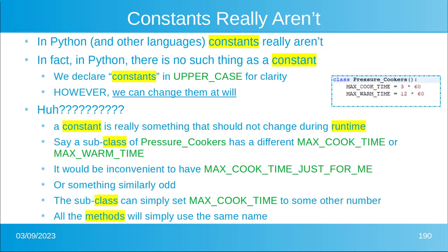Another concept you need to understand: constants really aren't constants. In Python and in a lot of other languages, the constants really aren't. In fact, in Python there's no such thing as a constant. We declare what we call constants in upper case for clarity so that we know we want them to be constant, but we can change them at will. A constant really is something that should not change during runtime. The gravity of the moon isn't going to change while we are working on our program. However, a constant is really something that shouldn't change during runtime.